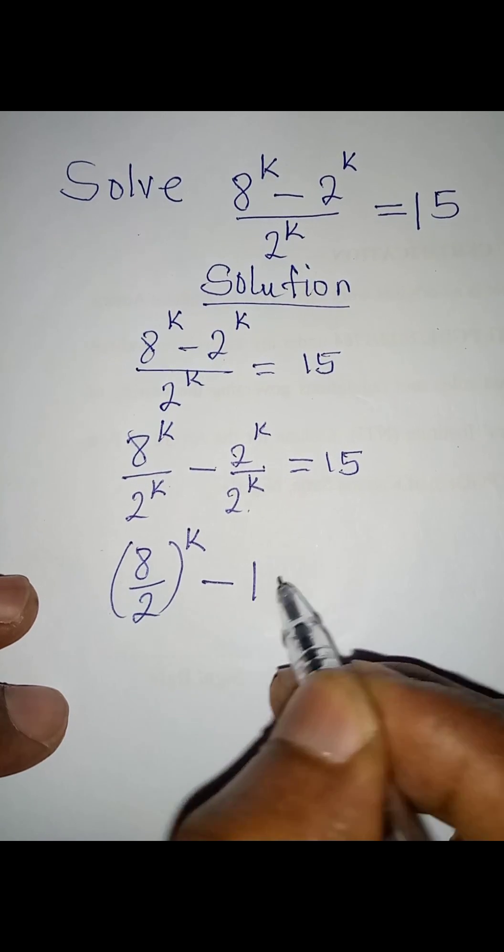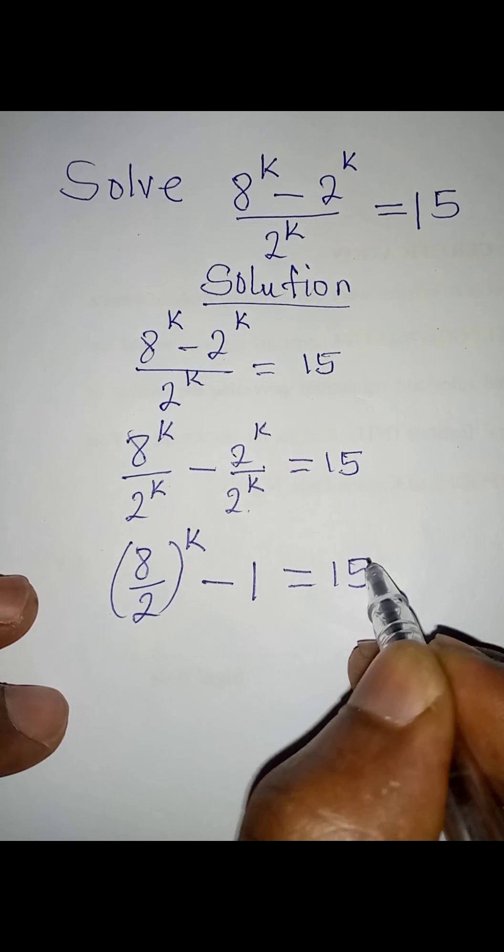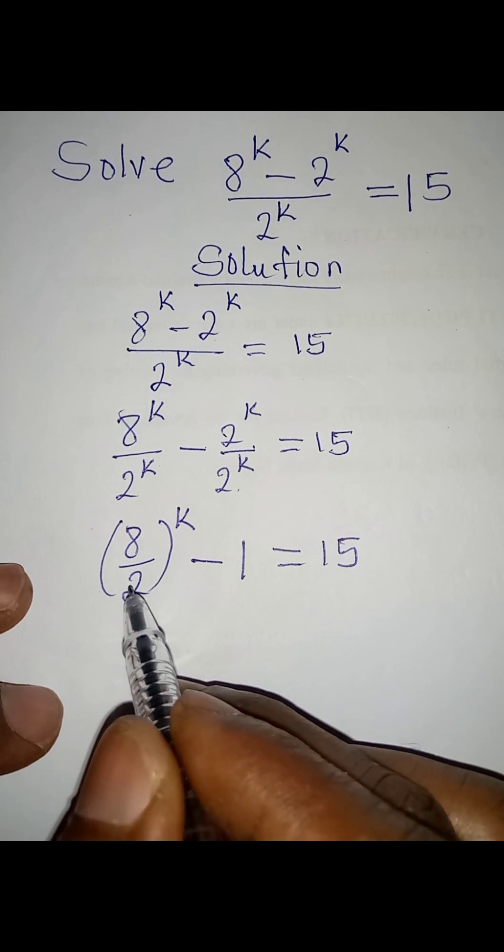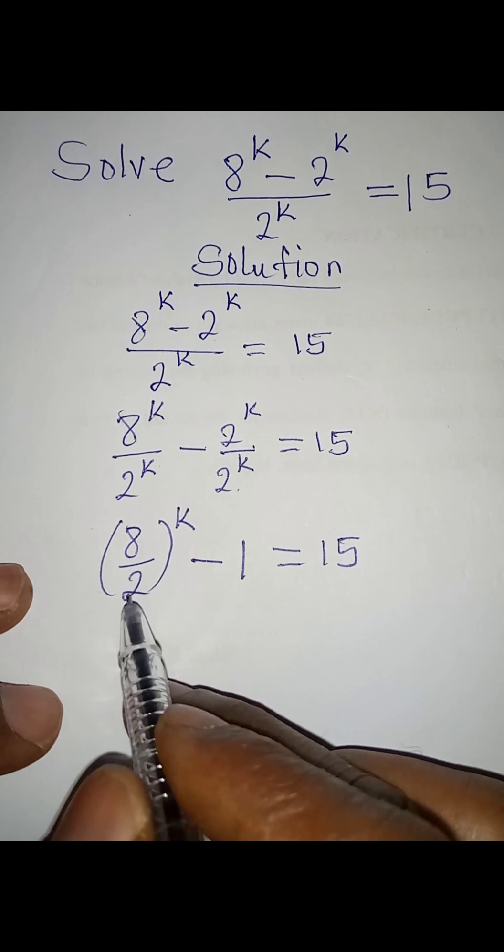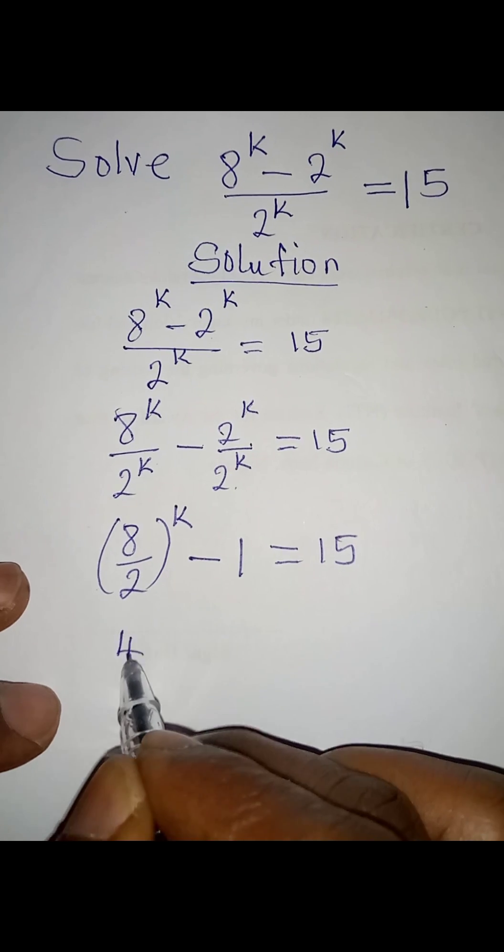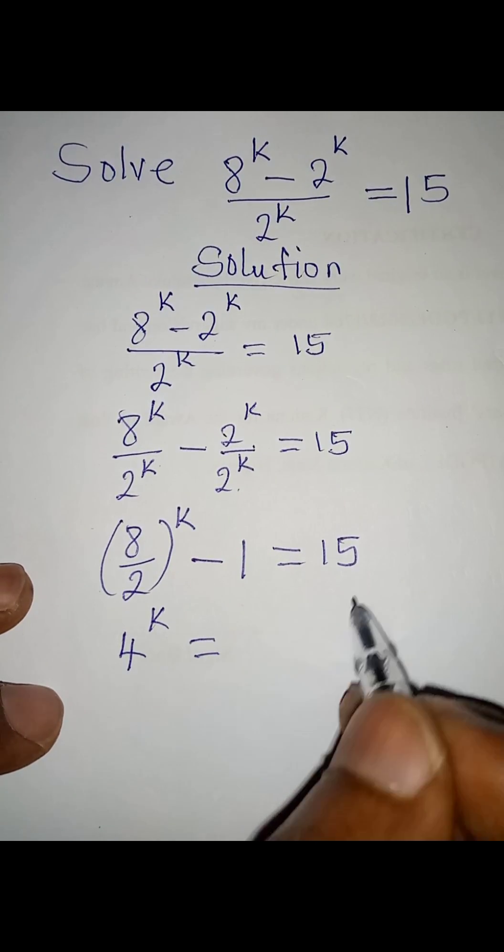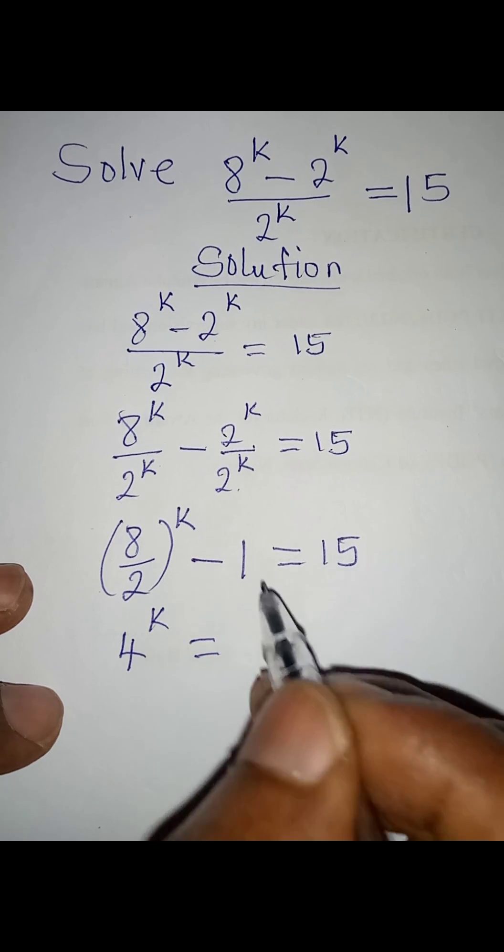Now let me collect like terms. And before then, 8 over 2 will give me 4, then I have 4 to the power k which will be equal to 15 plus 1, and that will give us 16.